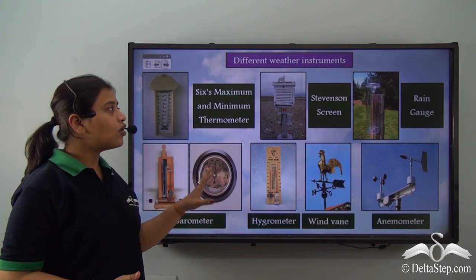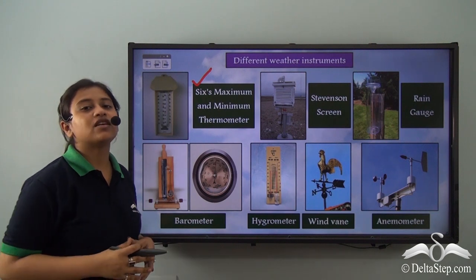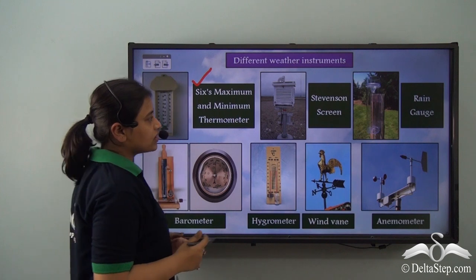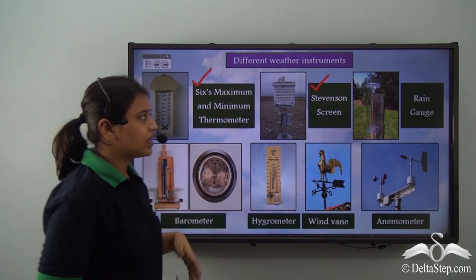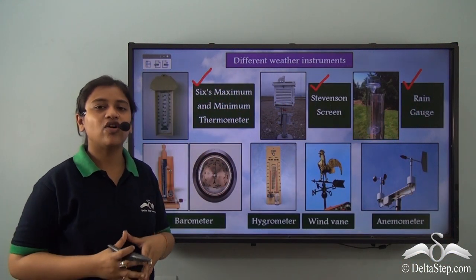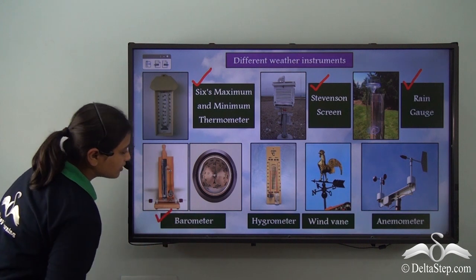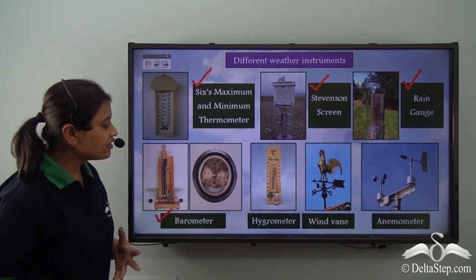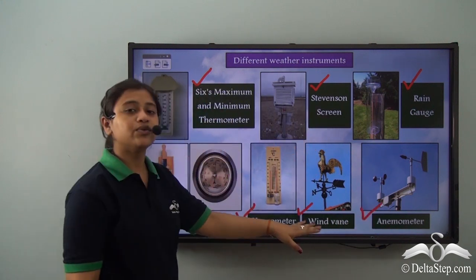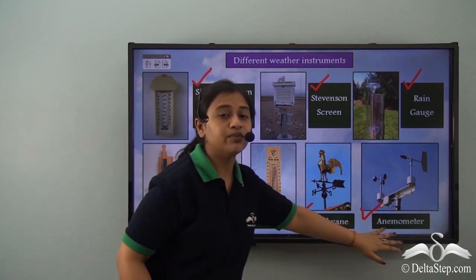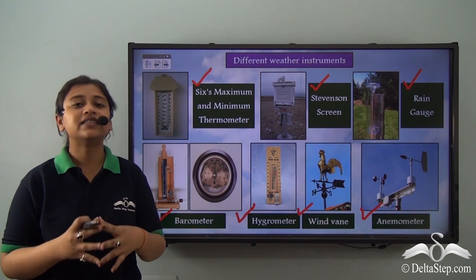So far we have learnt about many different weather instruments. We learnt about Six's maximum and minimum thermometer that records the temperature of the atmosphere, and Stevenson's screen that protects it. We learnt about the rain gauge that measures rainfall, the barometer that records atmospheric pressure, the hygrometer that measures humidity, the wind vane for wind direction, and the anemometer for wind speed.